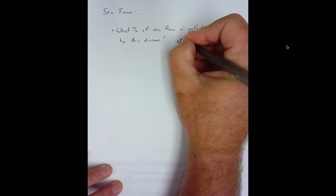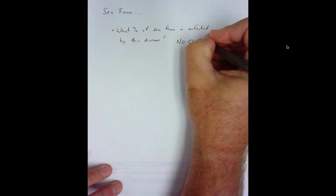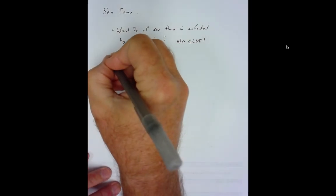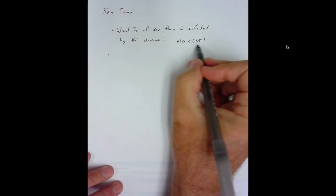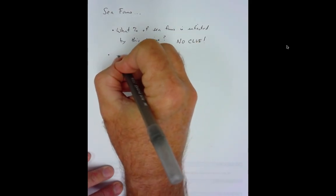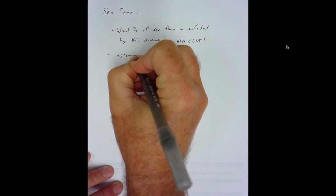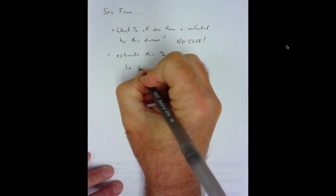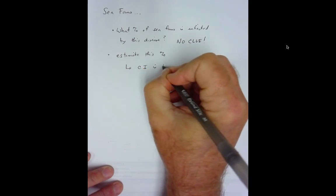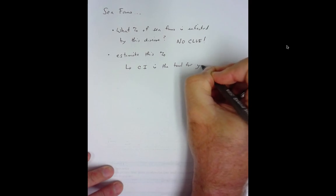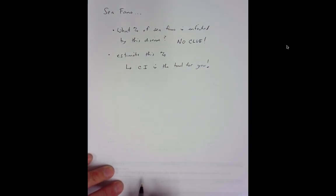First question: what percentage of sea fans is infected by this disease? Of all the sea fans in the Caribbean, what percentage of sea fans is infected by this disease? No clue. I have no idea, and really neither does anyone else. When you have no idea, when your answer here is unknown and you're wanting to estimate this percentage, then a confidence interval is the tool for you.